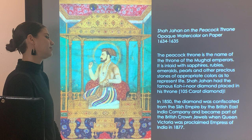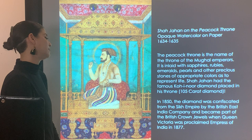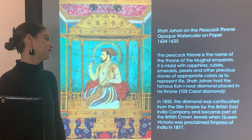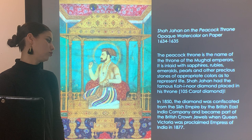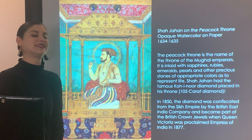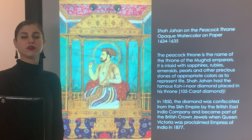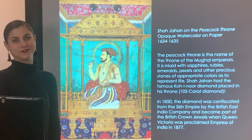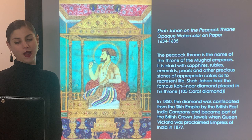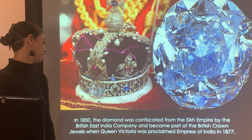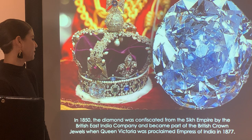Shah Jahan had the famous Koh-i-Noor diamond placed in this throne — after cutting it is a 105-carat diamond. In 1850 the diamond was confiscated from the Sikh Empire by the British East India Company and became part of the British Crown Jewels when Queen Victoria was proclaimed Empress of India in 1877. Although India later earned its independence from Great Britain, they have still not been able to get back the Koh-i-Noor diamond, which remains part of the British Crown Jewels today.